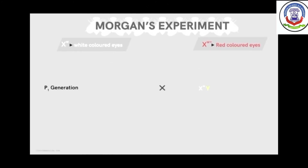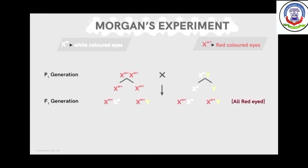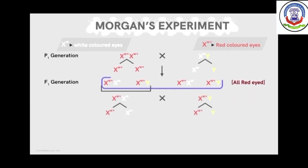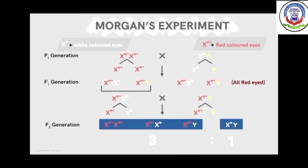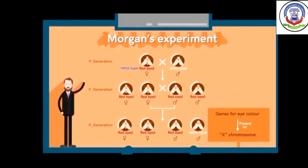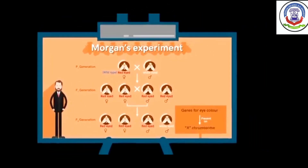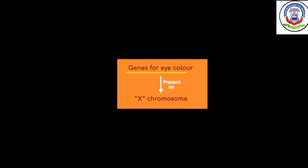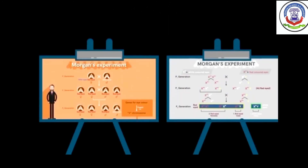We begin the cross of the white-eyed male with the red-eyed female. The cross yields all offspring with red eyes in the F1 generation. Crossing the F1 offspring gives a progeny in a 3:1 ratio — three red-eyed and one white-eyed. Specifically, we obtain one red-eyed male, two red-eyed females, and one white-eyed male. This matches exactly what Morgan obtained, confirming the assumption.